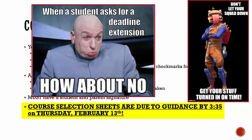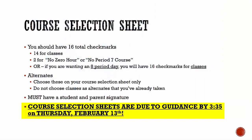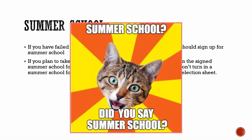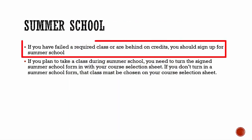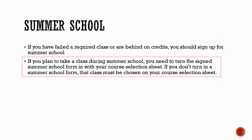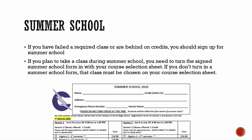If your counselor does not receive your course selection sheet by the due date, she will choose your classes for you. Remember, you will not be putting your course selections in PowerSchool on your own as you've done in the past. Rather, your counselor will be meeting with you individually to review your courses and then input them in PowerSchool with you. If you have failed a required class or are behind in credits to graduate on time, you should sign up for summer school. If you plan to take a class during summer school, you need to turn the signed summer school form in with your course selection sheet. If you don't turn in a summer school form, that class must be chosen on your course selection sheet.